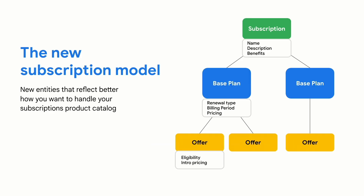Subscription products on Google Play Billing are now represented by a hierarchy of new entities. Subscriptions represent what you're selling to the user — the product, the benefits, and the description. Base plans are how you're selling it — whether it's an auto-renewable plan or a prepaid plan, the billing period length, and the base price. Offers are pricing modifications applied on top of the base price, for example, free trials or introductory prices.